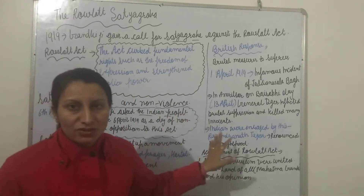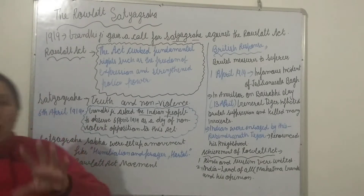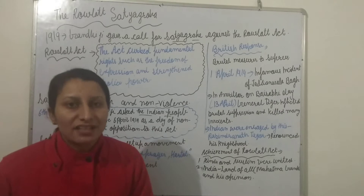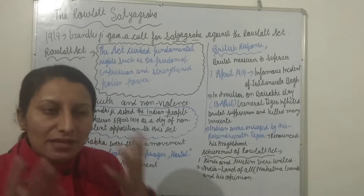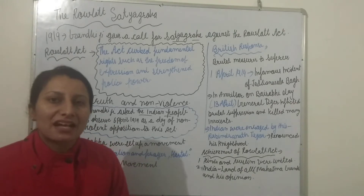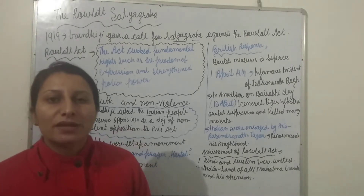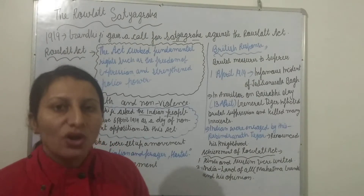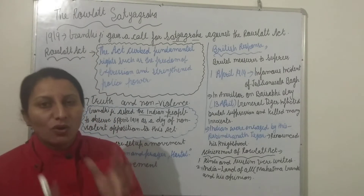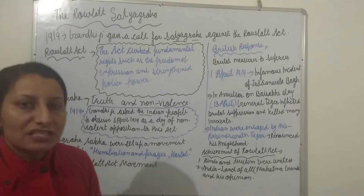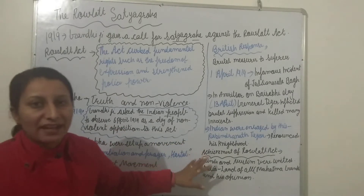The foundation of the movement was truth plus non-violence. On 6th April 1919, Gandhi observed and told all Indians that they would start a movement against this Rowlatt Act, because this act was destroying their freedom, their power, and their justice system.